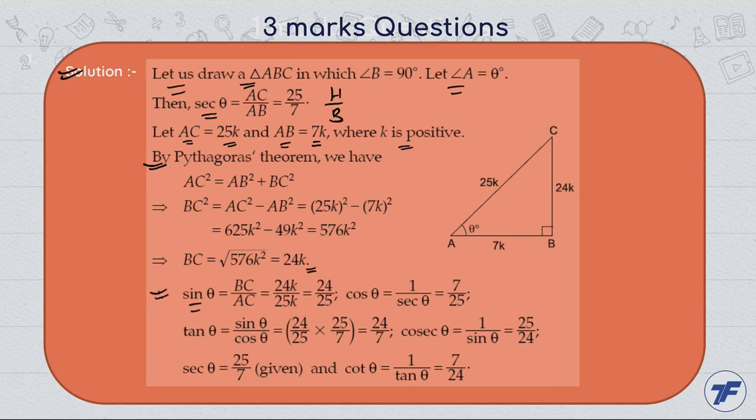See, sin θ is equal to perpendicular upon hypotenuse, which is BC upon AC, and its value is 24 by 25. Similarly, you can find the cos value. Base upon hypotenuse - the base is 7 and hypotenuse is 25. Similarly, you can find tan θ using perpendicular upon base concept. Clear?